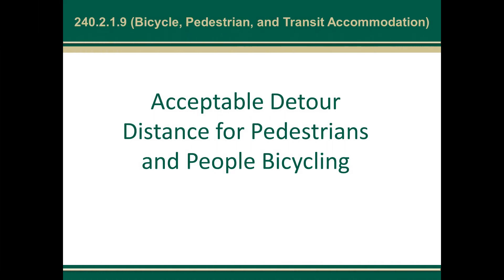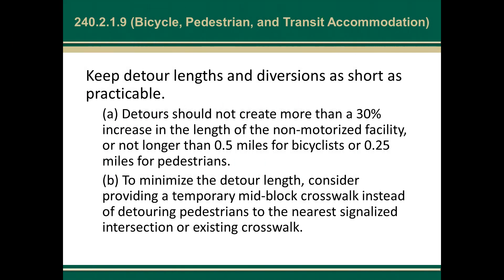Regarding location, we talk about acceptable detour distances for pedestrians and people bicycling. Keep detour lengths and diversions as short as practicable. Detours should not create more than a 30 percent increase in the length of the non-motorized facility, or be longer than a half mile for bicyclists or a quarter mile for pedestrians. To minimize detour length, consider providing a temporary mid-block crosswalk instead of detouring pedestrians to the nearest signalized intersection or existing crosswalk. This is guidance we've been wanting to move toward for a while.